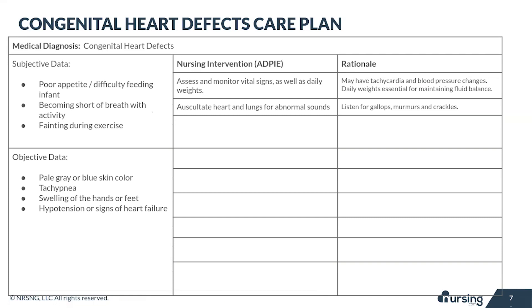You need to auscultate the heart and lungs for abnormal sounds. The key things you're listening for in the heart are gallops and murmurs. In the lungs, you want to pay attention to things like crackles, and you're also looking for signs like a wet cough that might indicate fluid on the lungs.